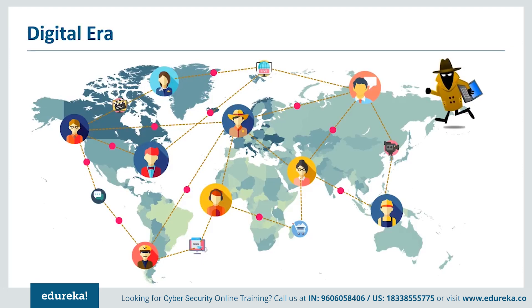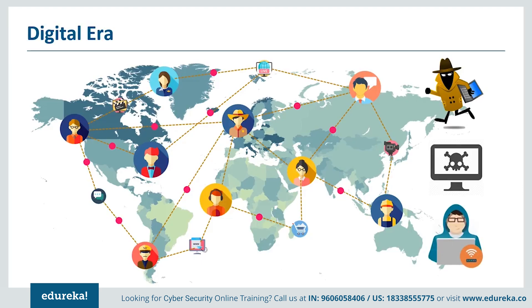Cyber criminals are in the business of stealing sensitive data like contact numbers, credit card information, and bank account details that they sell to third parties for profit. There are also malicious hackers with personal enmity hacking into systems to expose host vulnerabilities, and hacktivists inspired by political and social activism who hack systems opposed to their ideology. Making use of these vulnerabilities in the internet's architecture, people are trying to initiate attacks in cyber space — we call them cyber attacks.